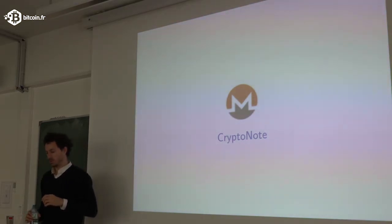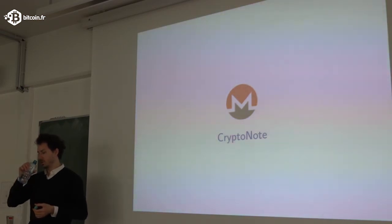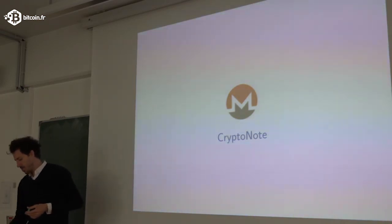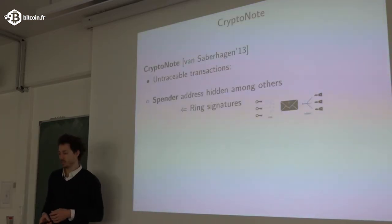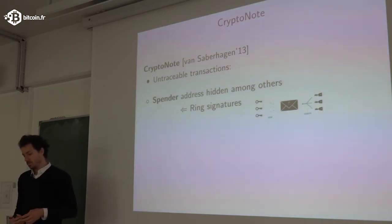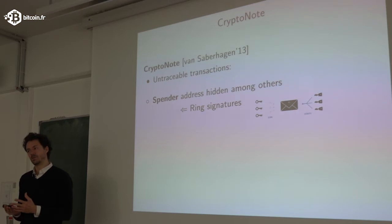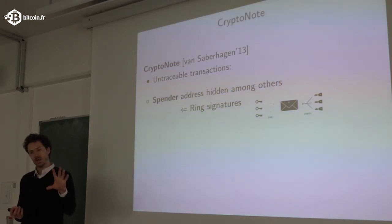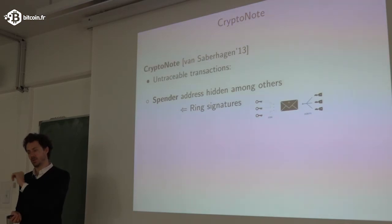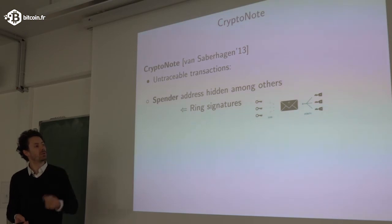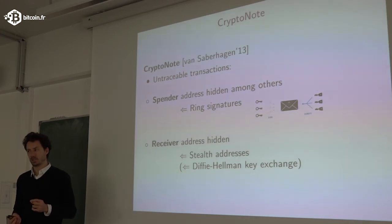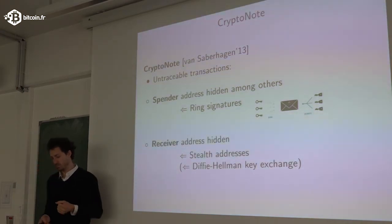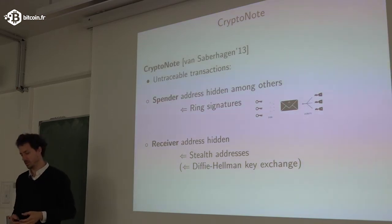Now let's talk about alternative currencies such as Monero, which uses a protocol called CryptoNote. It was introduced in 2013 by van Saberhagen. The goal of CryptoNote is to hide who sent the payment and who received it. To hide the spender, they use a concept called ring signatures. To hide the receiver, they use stealth addresses, which was something proposed even before but is implemented in Monero.